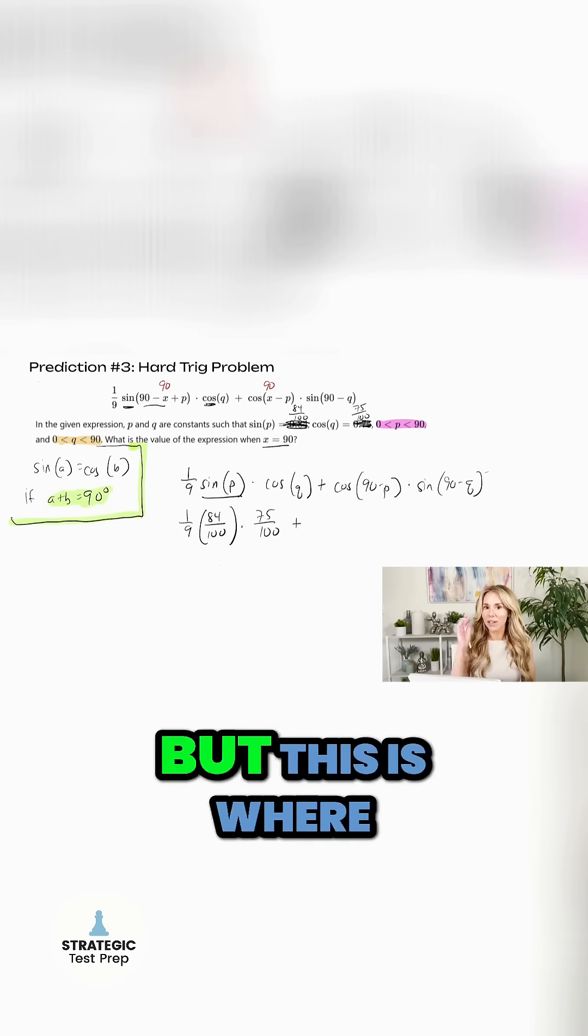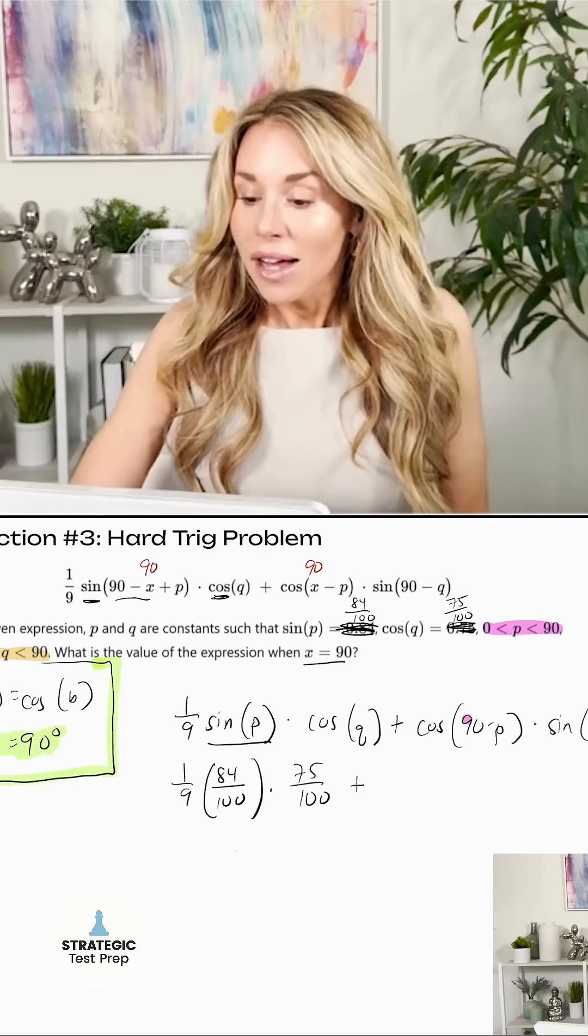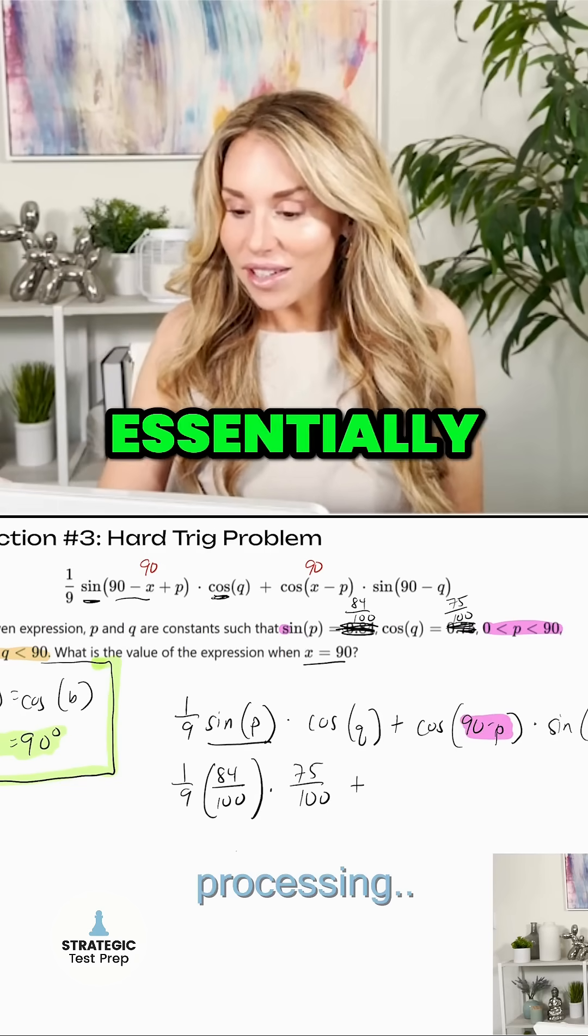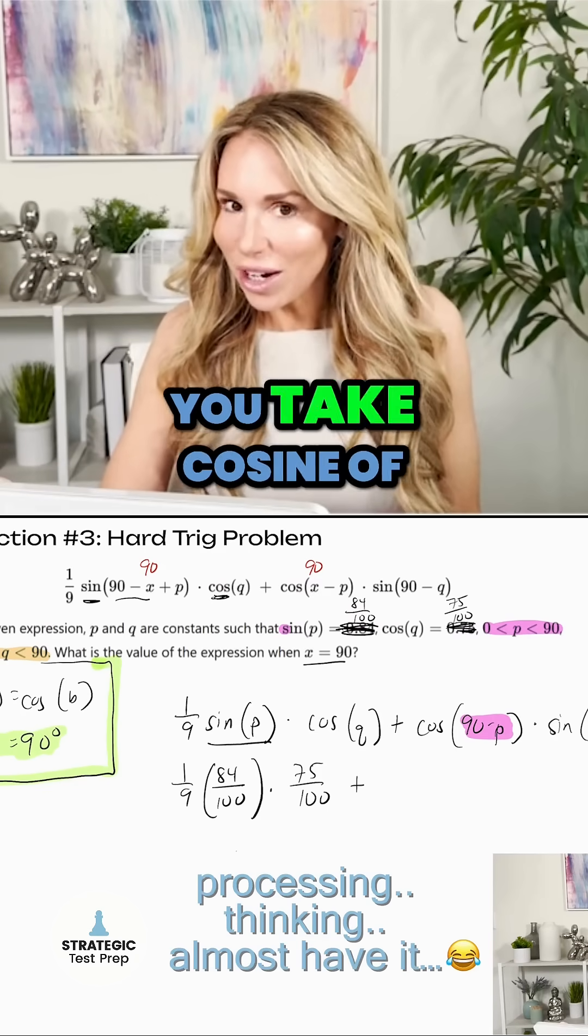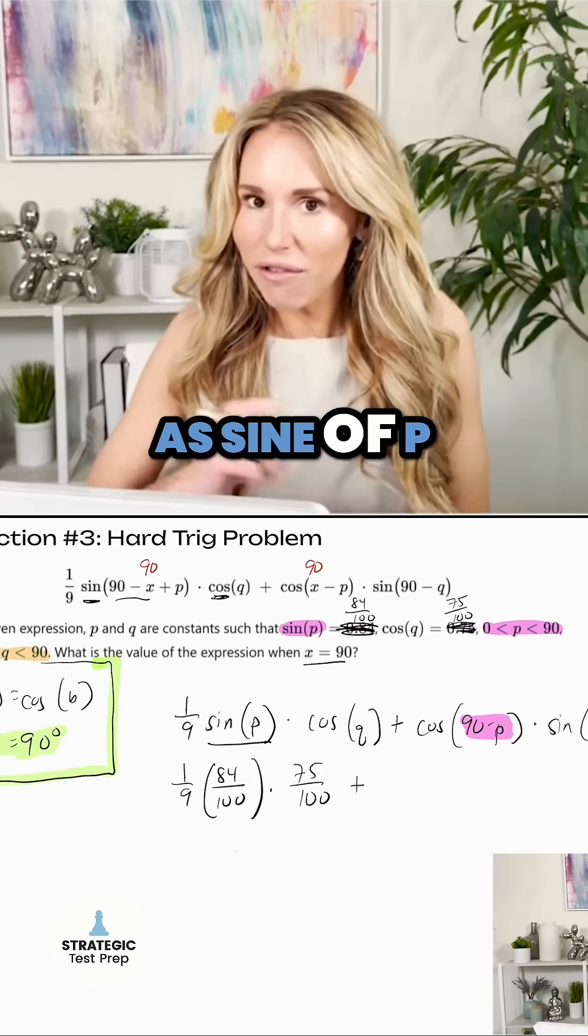And then we're going to add to that a cosine of 90 minus P. Now this is where it gets sneaky, tricky, but this is where the complementary angles rule comes in. 90 minus P is essentially going to be the same value if you take cosine of 90 minus P as sine of P.